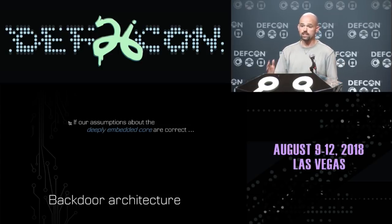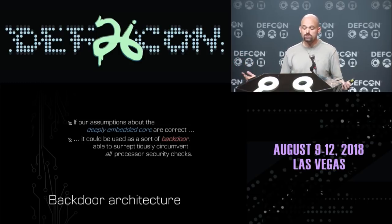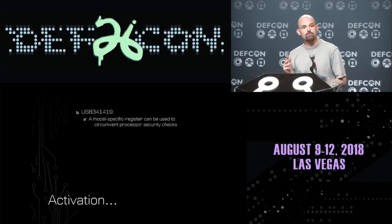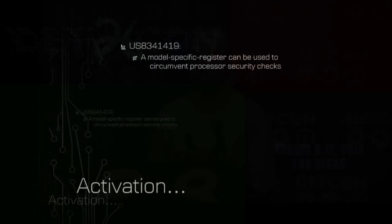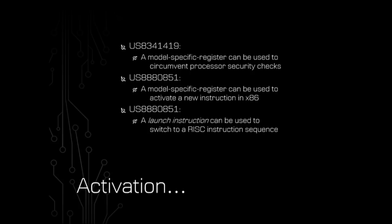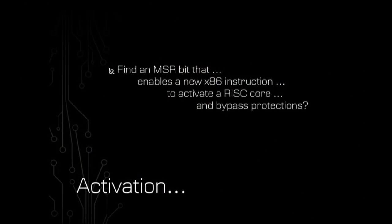They also discussed an X86 launch instruction — a new instruction added to the X86 ISA. Once the RISC core is activated, you can start a RISC instruction sequence through the launch instruction. Putting these ideas together: if our assumptions are correct, you could use this as a sort of backdoor — a means of surreptitiously circumventing all processor security checks. That's worth exploring more for security purposes.